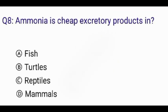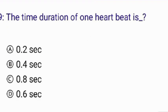Which of the following has oxygenated blood? The correct answer is option B: pulmonary veins. Ammonia is a chief excretory product in — the correct answer is option A: fish.